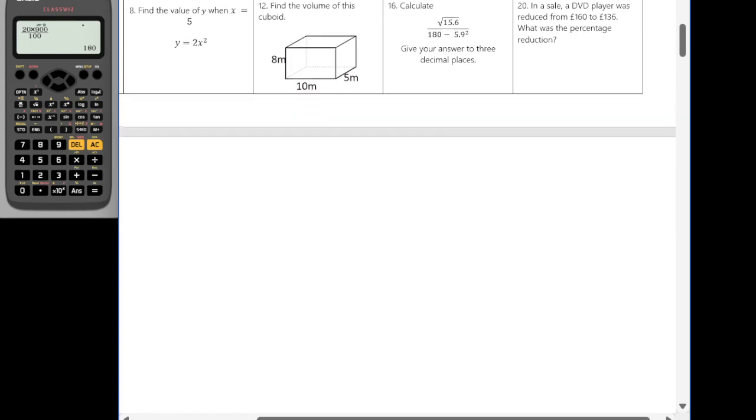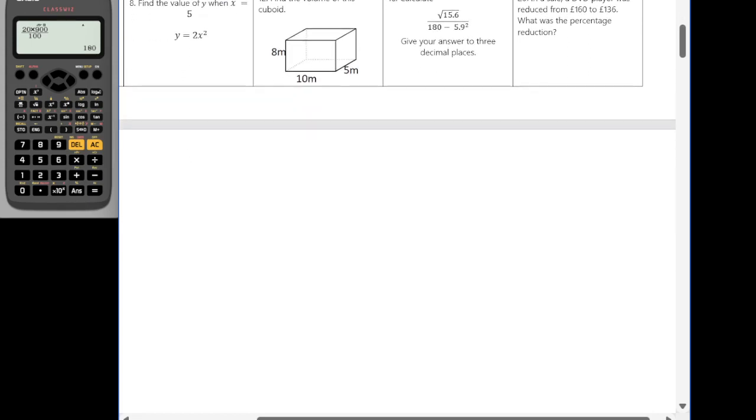And question eight. Find the value of y when x is equal to 5. So I'm looking at y is equal to 2 times by 5 squared. 2 times by 5 squared gives me the value of 50.